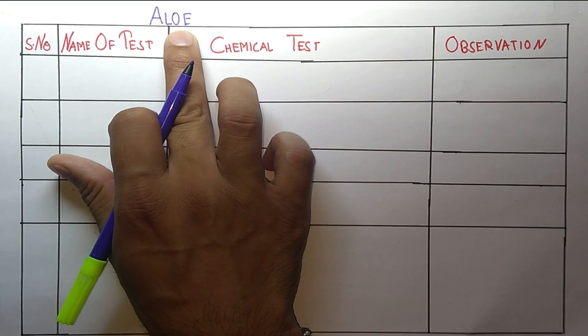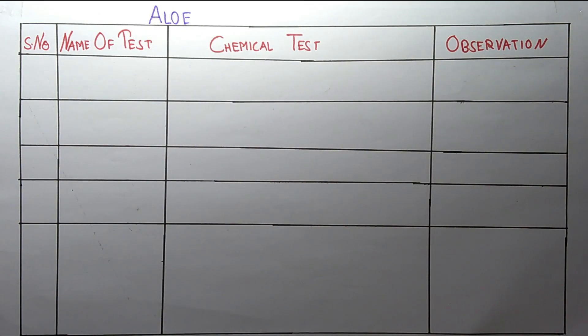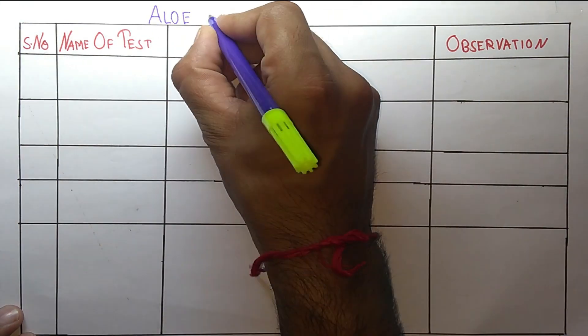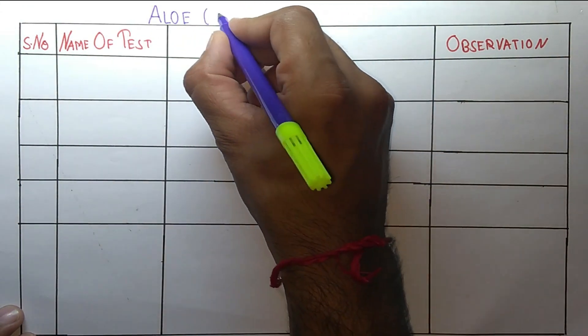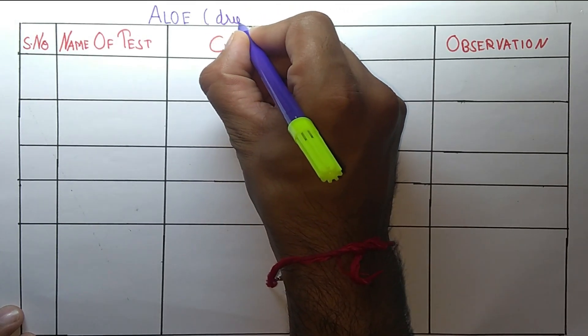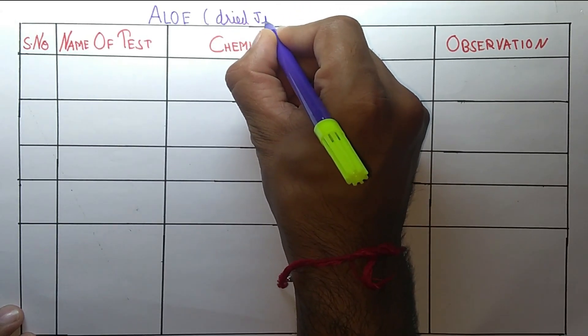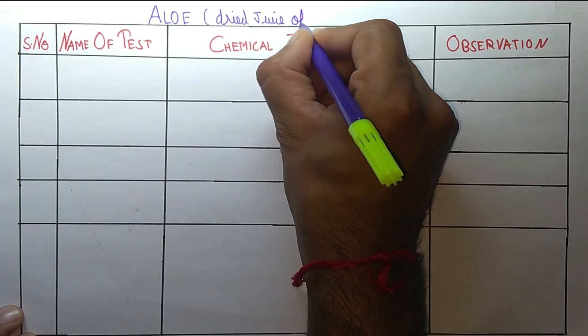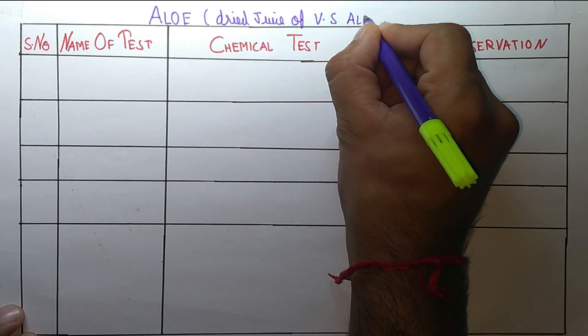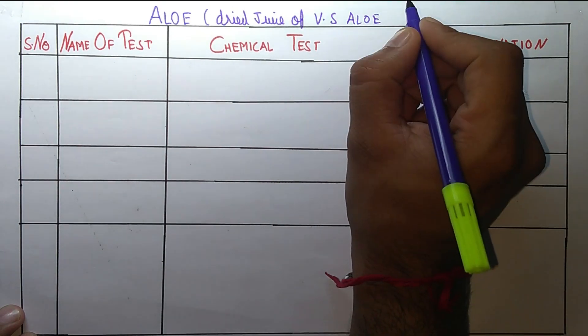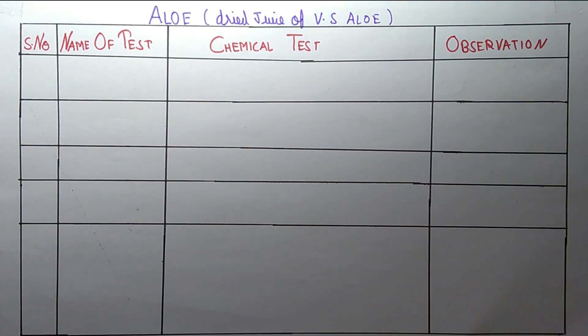Aloe is the biological source. It can be obtained from the dried juice of various species of aloe like aloe barbadensis, aloe ferrox, aloe pyre.